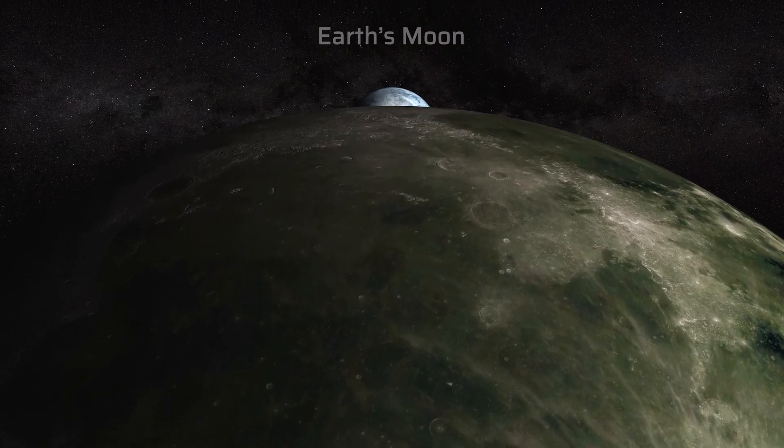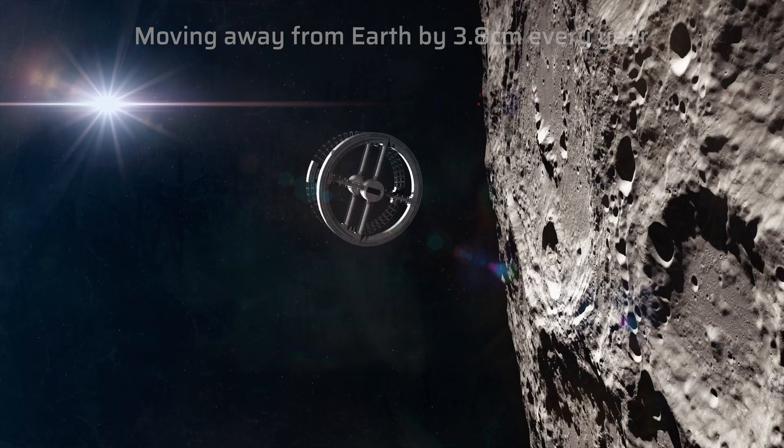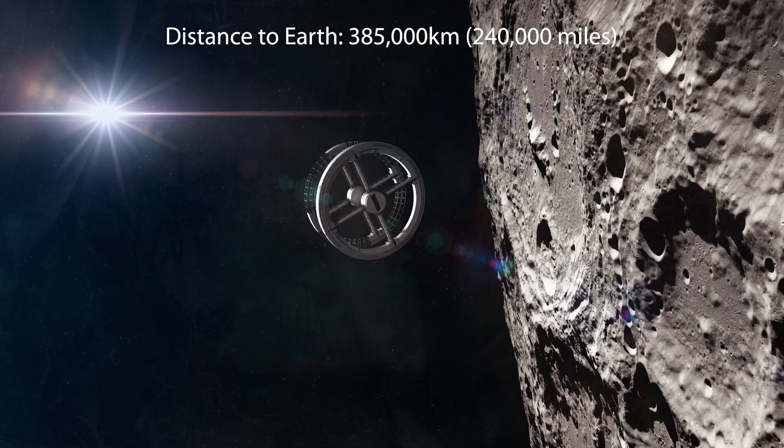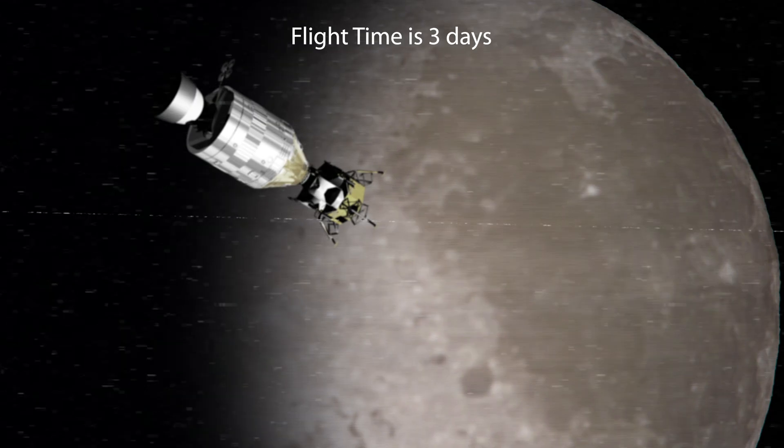Earth's moon. The moon is moving away from Earth by 3.8 centimeters every year. And the distance from Earth to the moon is 385,000 kilometers. It takes 3 days to fly to the moon.